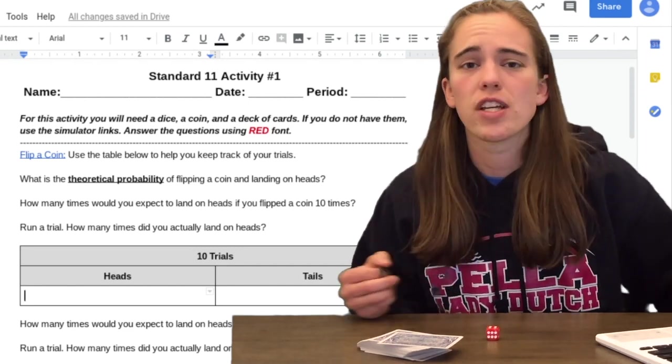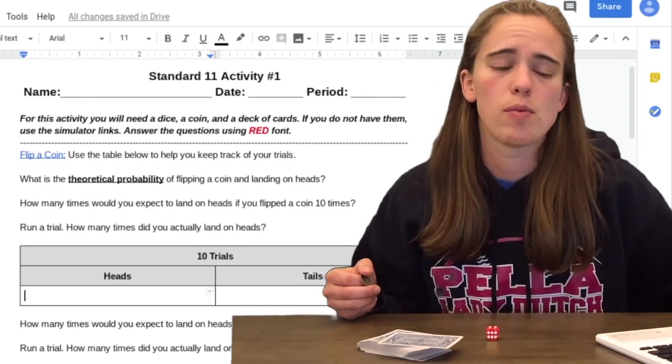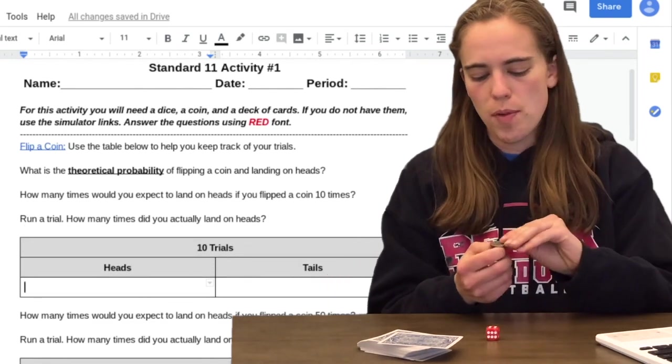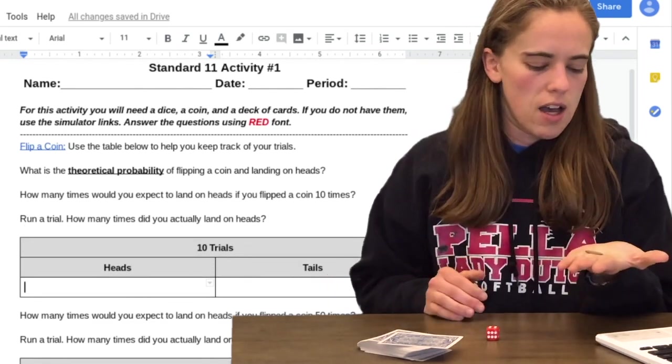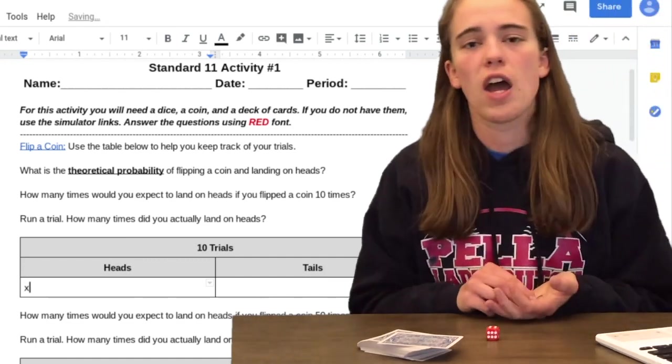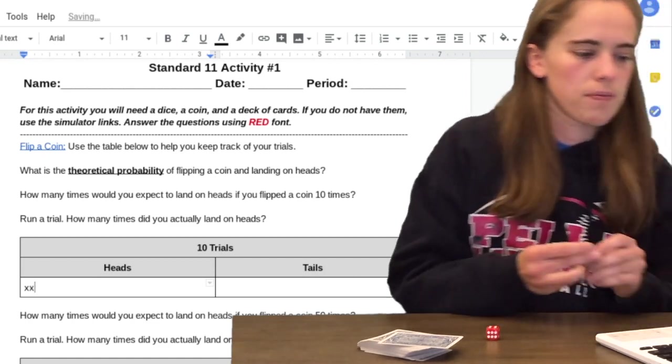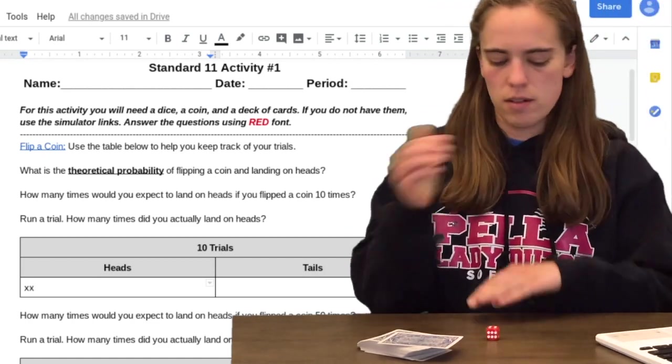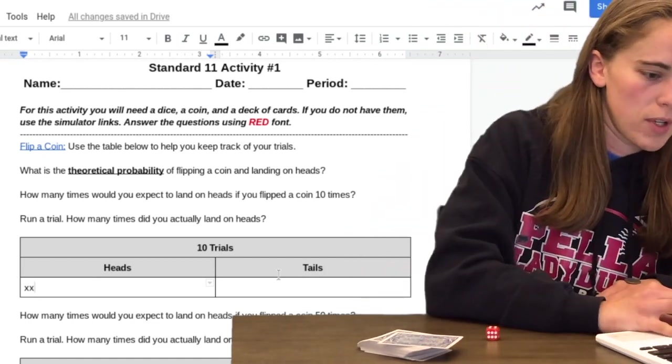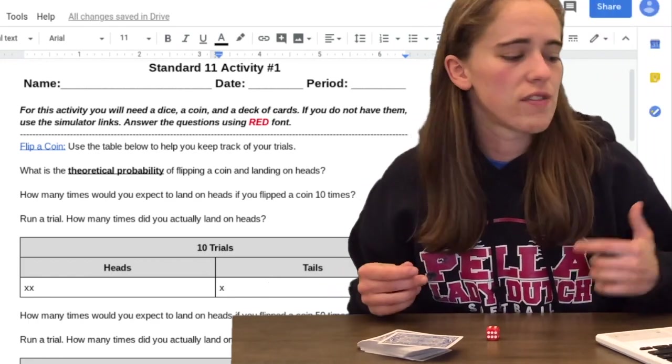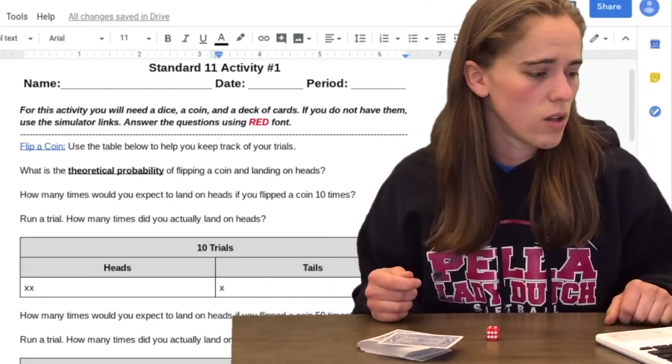Then you're actually going to run the trial for the experimental probability and use the table. So it says run trial, how many times did it actually land on heads? So I'm going to flip it once. It is heads. I'm going to put an X for heads to keep track. I'm going to go again, flip it again, I got another heads. I'm going to flip it again. Tails. So I'm going to put a tails. You get the idea. You're going to end up running it a total of 10 times, so you should have 10 X's in those spots.